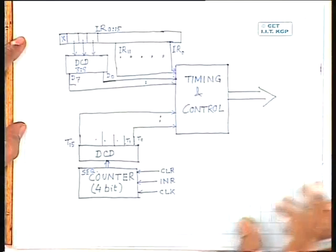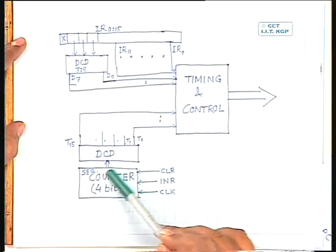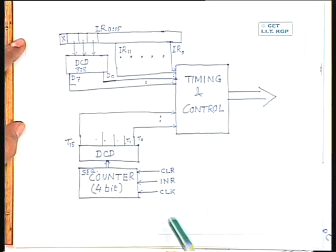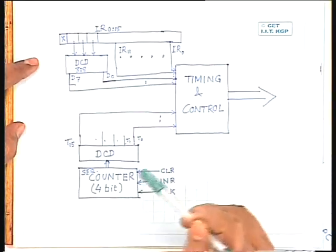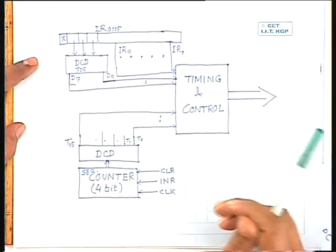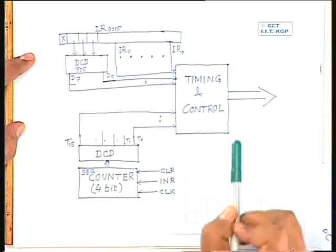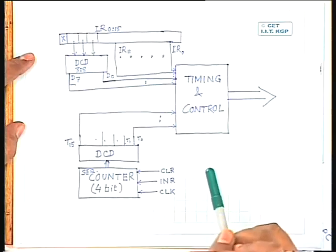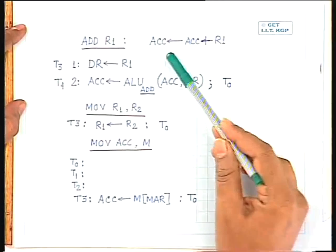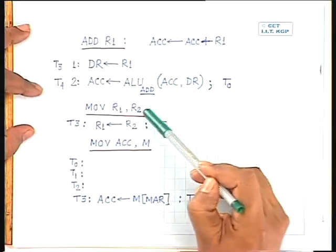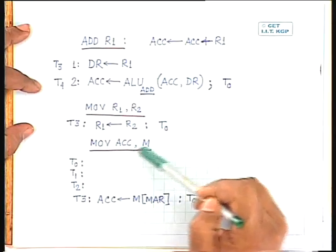From the instruction register, the instruction opcode goes to the instruction decoder. We have a sequence counter to generate different time states of the CPU, and the counter output goes to a decoder. All the decoder outputs — the sequence counter decoder output and the instruction decoder output — go to the timing and control unit, which generates the timing clock in the required sequence. We focused on three instructions: ADD R1, MOVE R1 R2, and MOVE Accumulator Memory.